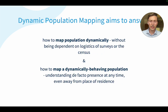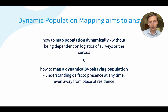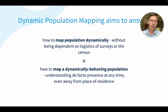When we think about dynamic population mapping, what do we mean? One way to look at it is how to map population more dynamically in terms of time — not being dependent on the logistics of surveys or the census — and how to map population behaving in dynamic ways, understanding where people are de facto present at any time, even if they are away from their place of residence.